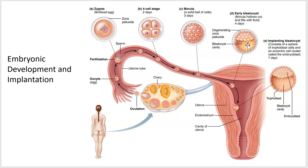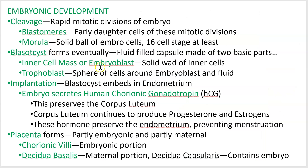Once it becomes this hollow structure called a blastocyst, there are two parts: the embryoblast, also called the inner cell mass, which is the inner bit, and the outer ring called the trophoblast, along with the blastocyst cavity. The embryoblast becomes the embryo, while the trophoblast is the outer ring that interfaces initially with the endometrium.